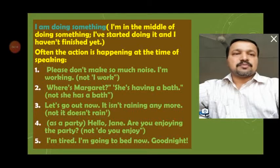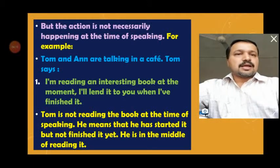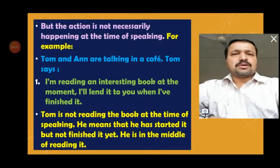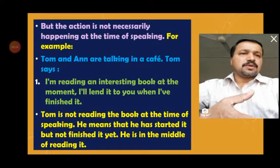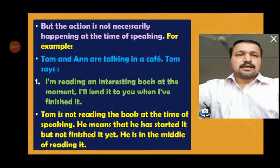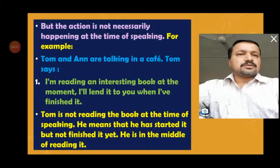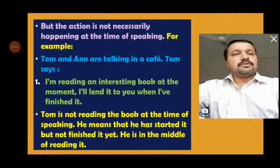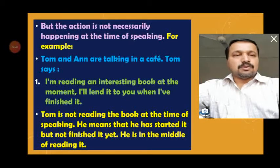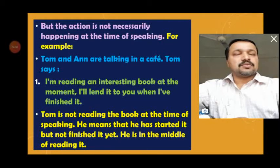Use 2 — sometimes the action may not be happening exactly at the time of speaking, but it can still be stated in present continuous. For example, Tom and Anna are talking in a café. Tom says 'I am reading an interesting book at the moment; I'll lend it to you when I've finished.' But right now in the cafeteria he is not reading — it is about the present period he is living in, not the exact moment of speaking.